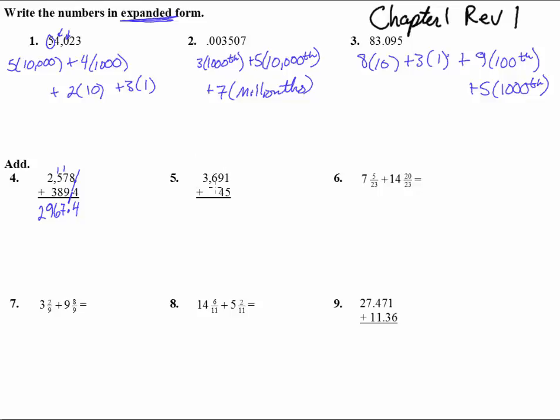Number five. Three thousand six hundred ninety-one plus forty-three. The decimals are already lined up, so that's marvelous. One plus five is six. Nine plus four is thirteen. I have a seven there and a three. Three thousand seven hundred thirty-six.